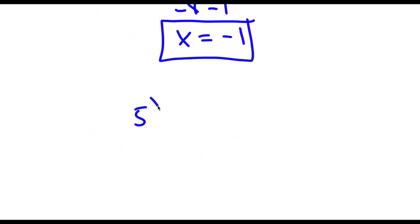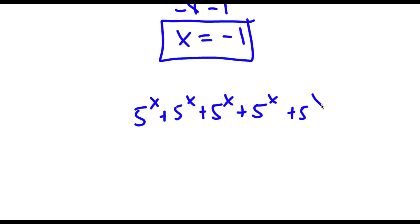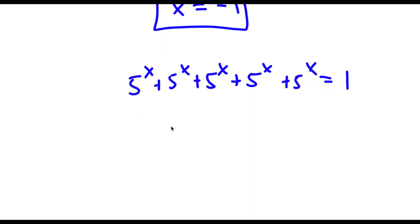Another way to do this: we have 5 to the power of x, five times, equal to 1. This is the same thing as 5 to the power of x times 5 equals 1.